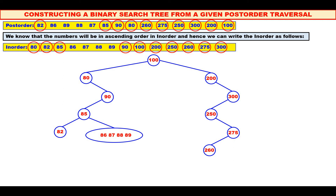Now, among 86, 87, 88, 89, which is the root? See the post-order — it is 87. Mark 87 and mark 87 in the inorder also. To the left of 87 you have 86. Therefore, 86 becomes the left child of 87. And 88, 89 are to the right of 87, so 88 and 89 are in the right sub-tree.